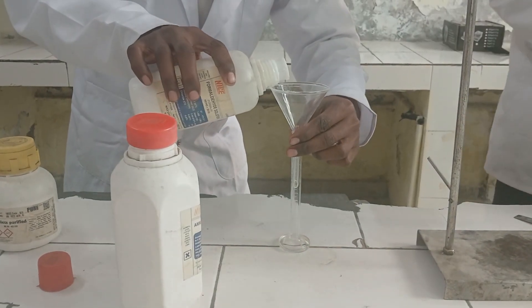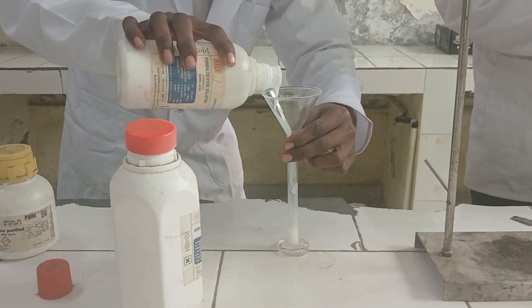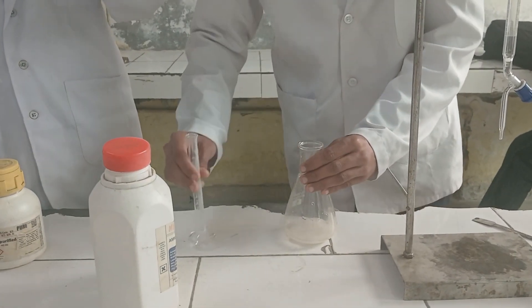Now, we are adding 5 ml of formaldehyde solution to the conical flask.